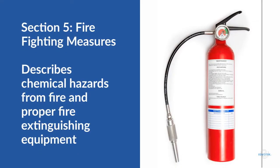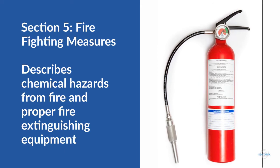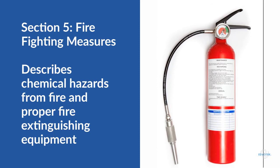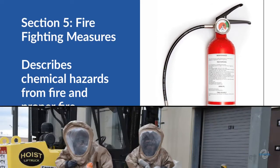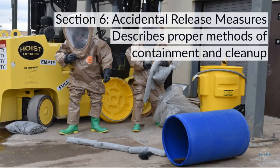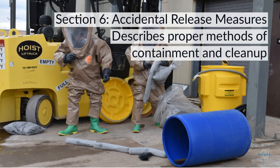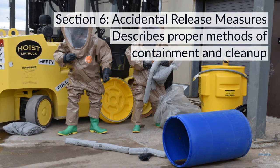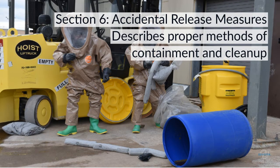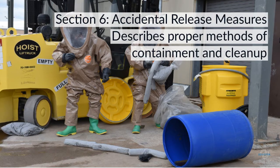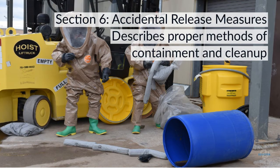Section 5, Firefighting Measures, details any potential chemical hazards from fire and lists suitable fire extinguishing techniques and equipment. If you spilled a chemical and wanted to know how to clean it up, you would refer to Section 6, Accidental Release Measures. This section details emergency procedures, proper personal protective equipment (PPE), and the necessary protocol for containment and cleanup.